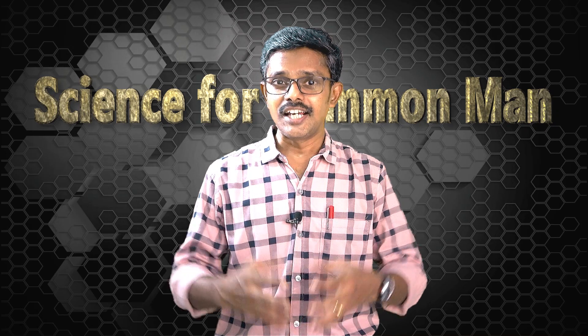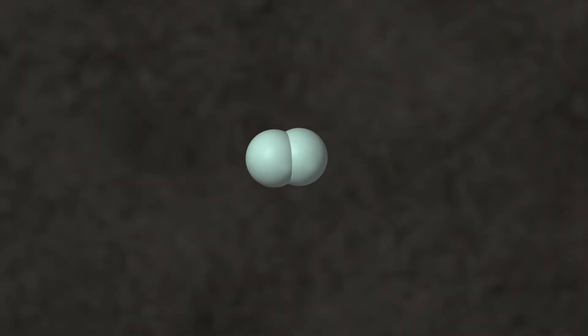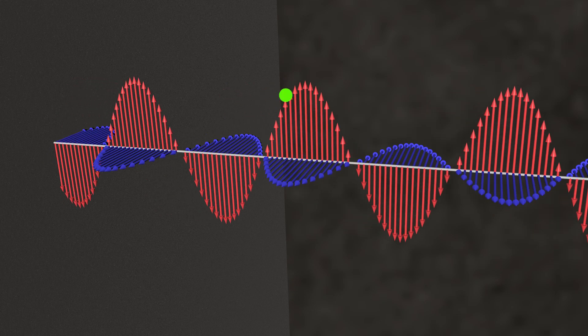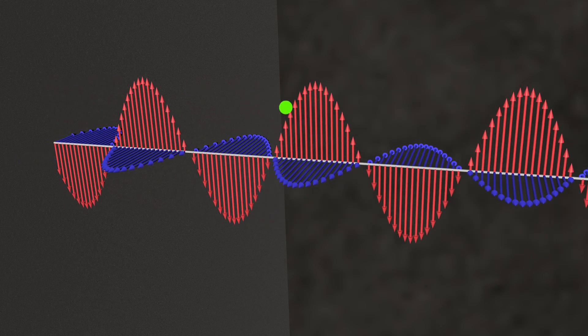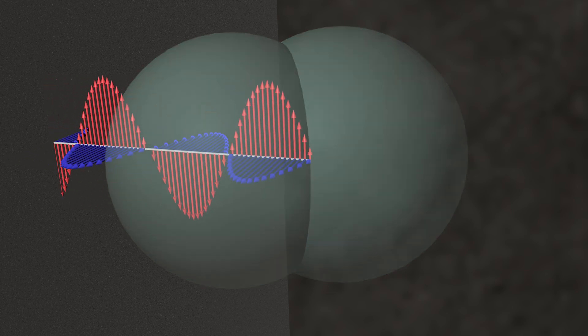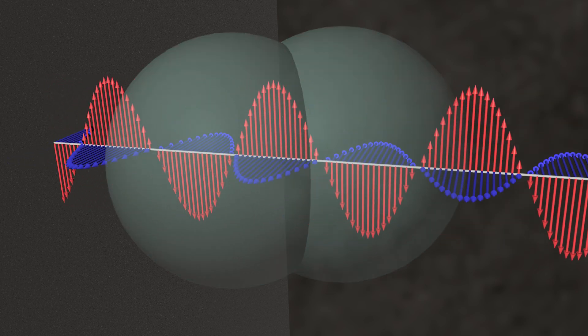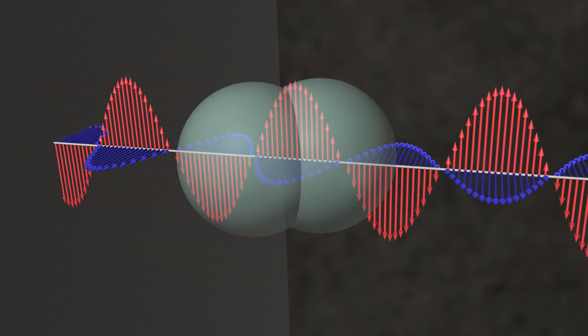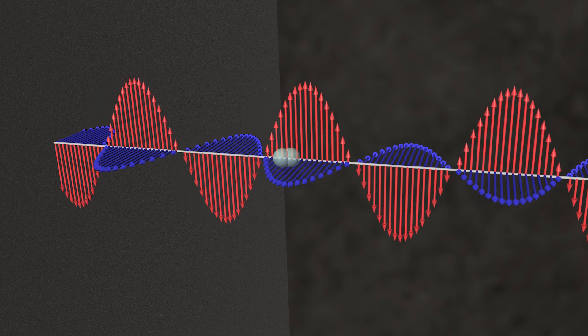Now let us see what happens when blue light passes through a space where an oxygen molecule is present. The size of an oxygen molecule is very small compared to the wavelength of the wave, so the oxygen molecule starts feeling the variations or oscillations in the electric field of blue light. If the size of the molecule were larger than the wavelength, it would not have felt the variations. That is why the effect called Rayleigh scattering happens only when the molecular or atomic size is much smaller than the wavelength.